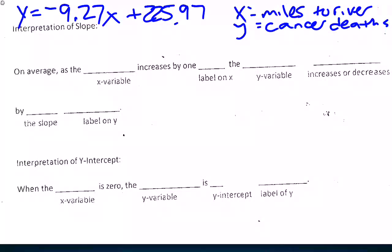So how do I fill this in? I'm just starting right here for slope. On average, as the x variable. What's my x variable? Miles to the river. So as the distance to the river increases by one mile, because that's my unit. Right here.